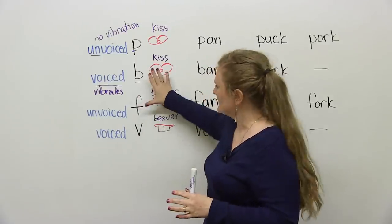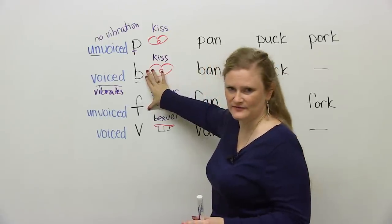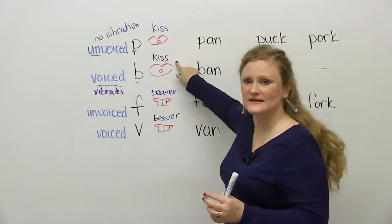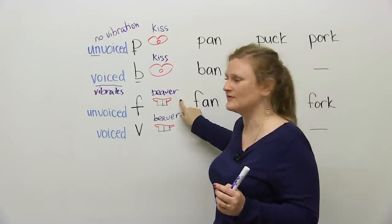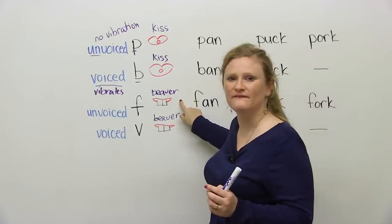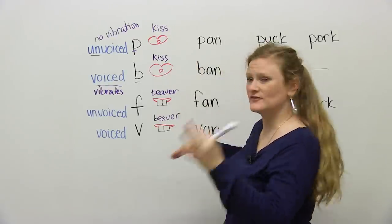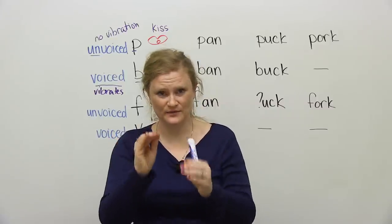So a lot of people maybe have problems with the B and the F. You have to look at this. The B is a kiss mouth, and the F is a beaver mouth. We're going to go through some exercises to help you say these words, even though they're very difficult.